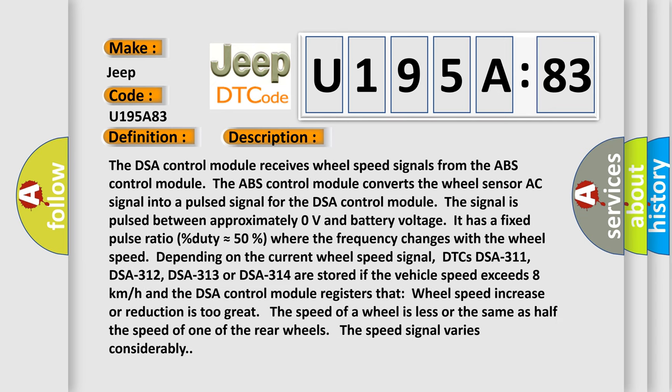The DSA control module receives wheel speed signals from the ABS control module. The ABS control module converts the wheel sensor AC signal into a pulsed signal for the DSA control module. The signal is pulsed between approximately zero volts and battery voltage. It has a fixed pulse ratio, duty approximately equals 50%, where the frequency changes with the wheel speed.